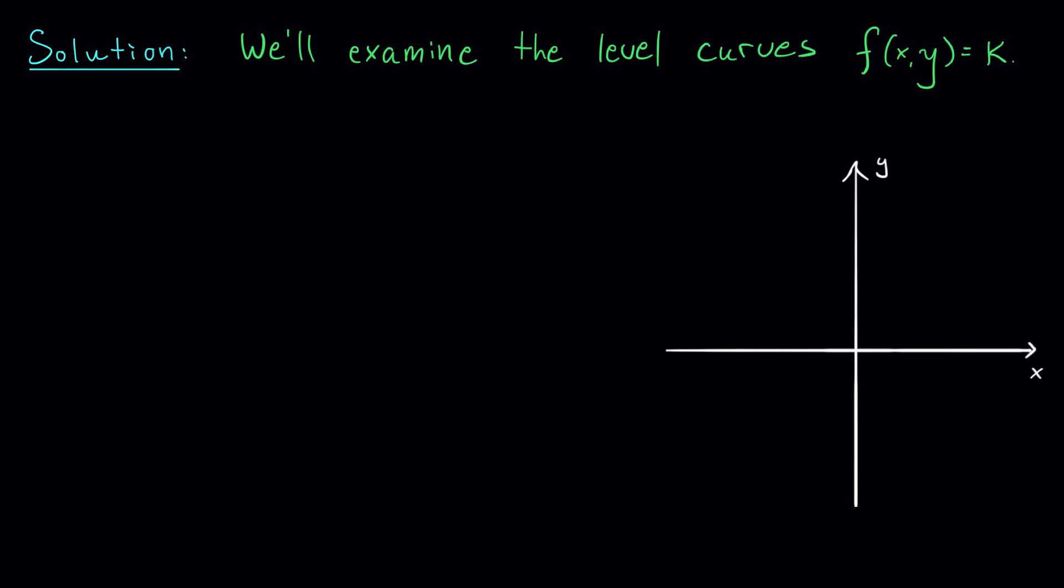Okay, so to start this problem off, we need to look at the level curves of our function by setting f(x,y) equal to k. Remember, f(x,y) here is 4x² plus y² plus 1, and we're setting that equal to k. What does this curve look like in the xy plane?